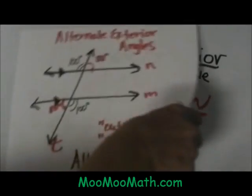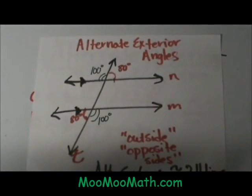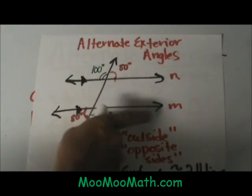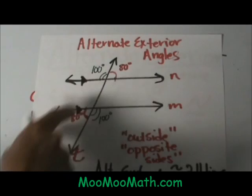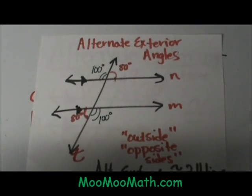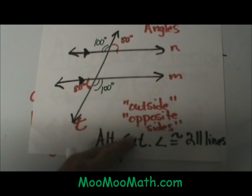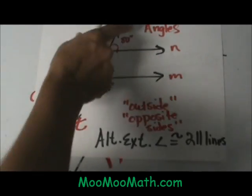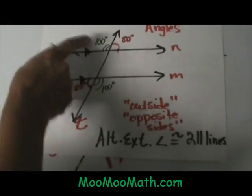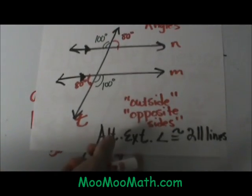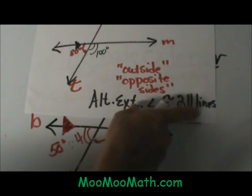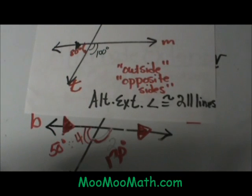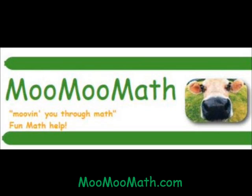Let's look at a quick summary of alternate exterior angles. We've got two lines — if they're parallel we have a transversal. If they're parallel, we know that these alternate exterior angles have to be congruent to each other. Alternate exterior means outside — not between the two lines but on the outside — and on opposite sides of the transversal. Alternate exterior angles are congruent if the two lines are parallel. That is a quick summary of alternate exterior angles.